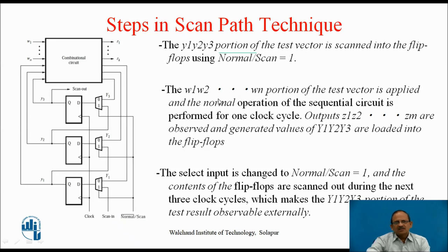Next, the W1 to Wn portion of the test vector is applied, and the normal operation of the sequential circuit is performed for one clock cycle. After performing this, the outputs generated on Z1 to Zm are observed, and the generated values of the next state variables Y1, Y2, Y3 are loaded into the flip-flops.